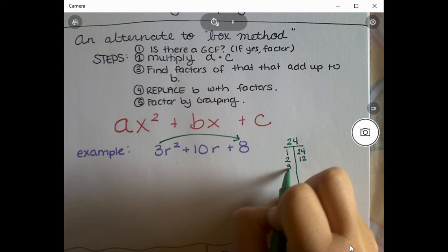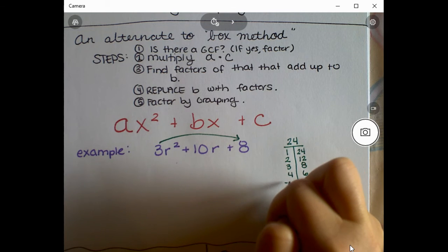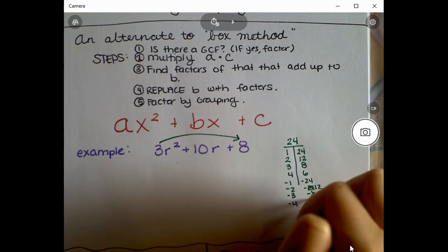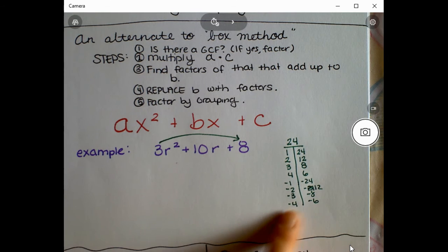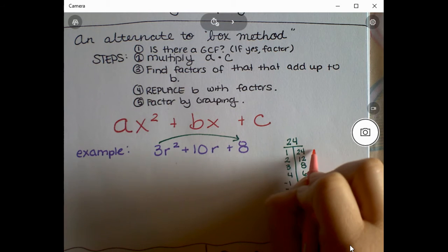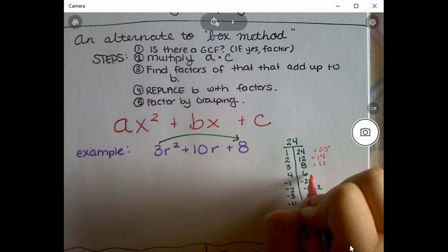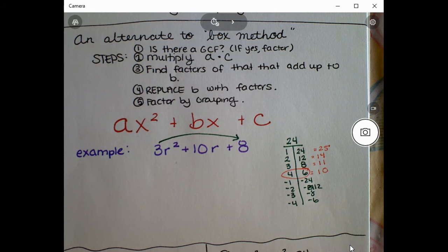The factors of 24 are: 1 and 24, 2 and 12, 3 and 8, 4 and 6 — and also the negative versions of each. I'll include the negatives to show how it works, even though since our product is positive they won't apply here. Checking sums: 1+24=25, 2+12=14, 3+8=11, 4+6=10. That's the one!